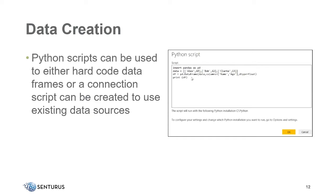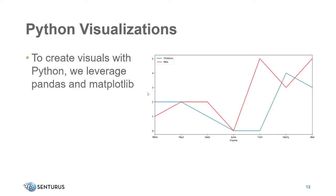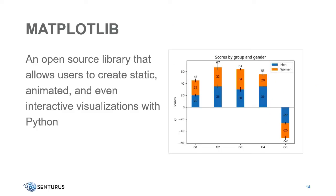We create visuals with pandas and matplotlib. Matplotlib is an open source library, so we can have static, animated, and even interactive visualizations — things that you don't get out of the box. You might say, 'well, I can just click Get More Visuals' — but a lot of those want you to pay for them. Matplotlib is open source and free, the magic word. Why pay for it when you can write a script?